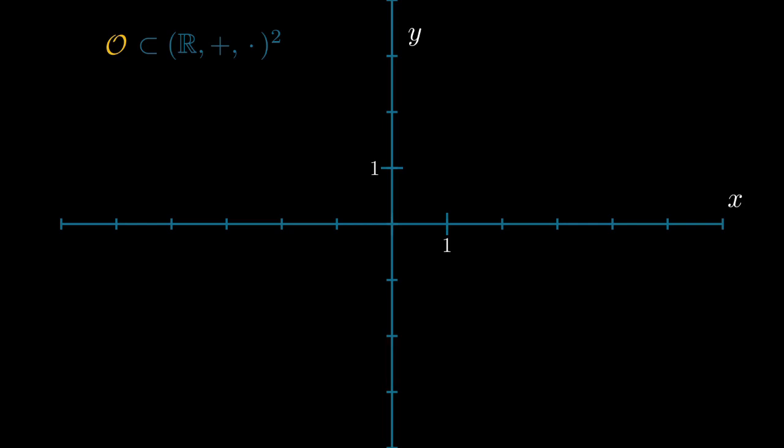The principal ideal property means that all ideals are principal. That means that they can be generated by one element. Equivalently this property means that the class number is 1. Orders being real quadratic means that they can be embedded into R2 and by R2 we mean the ring R2 with component-wise addition and component-wise multiplication.